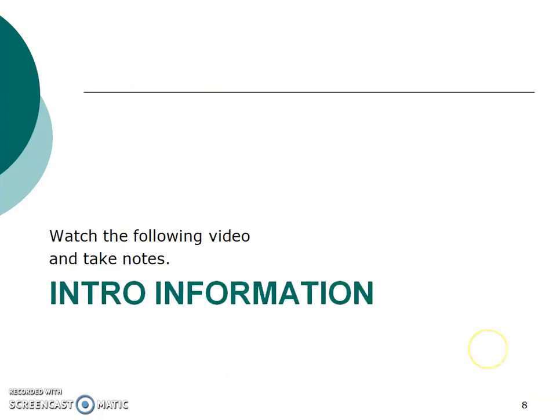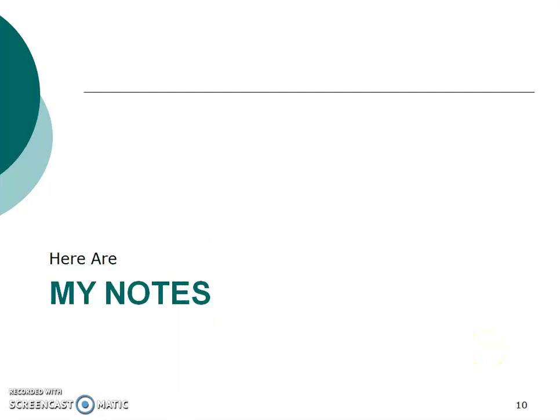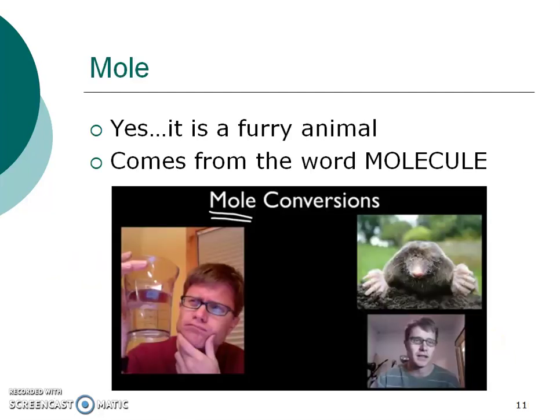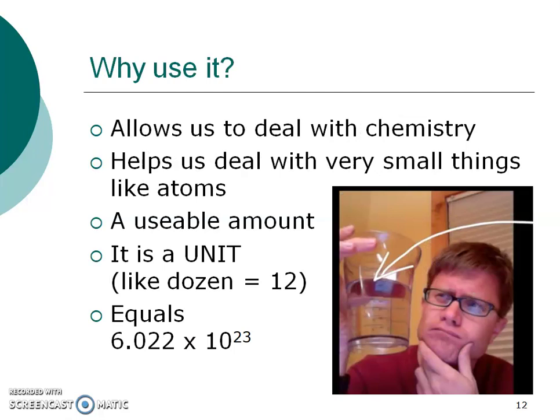So you should have watched that intro information on mole conversions. The mole is a furry creature, but really in chemistry it comes from the word molecule. So why do we use it? Chemists like to deal with very, very small things like atoms, and so it's going to be a very usable amount. It's another unit — just like one day you learned that a dozen eggs means 12, or that there are 12 inches in one foot. A mole is another unit that represents the number 6.022 times 10 to the 23rd.